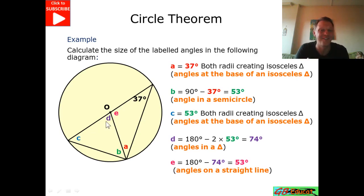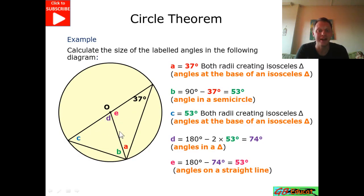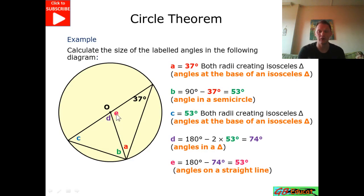I've used angles on a straight line for E. Here I've got a straight line, so I've taken 180 take away 74, which is my D, leaving me with 53 — angles on a straight line being my reason for this.